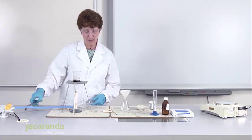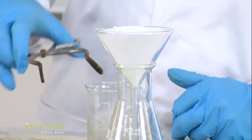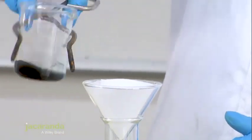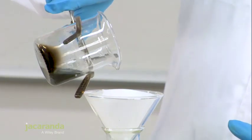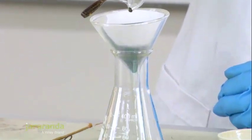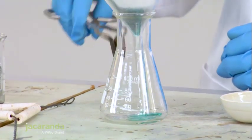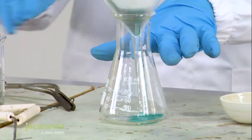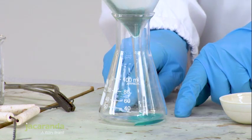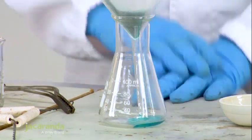We can take it over to the filter flask and pour our solution. Give it a bit of a shake and pour our solution into the flask. You'll notice that there's a clear blue solution in the bottom part of the flask. That's known as the filtrate and that's copper sulphate solution or copper sulphate aqueous solution.